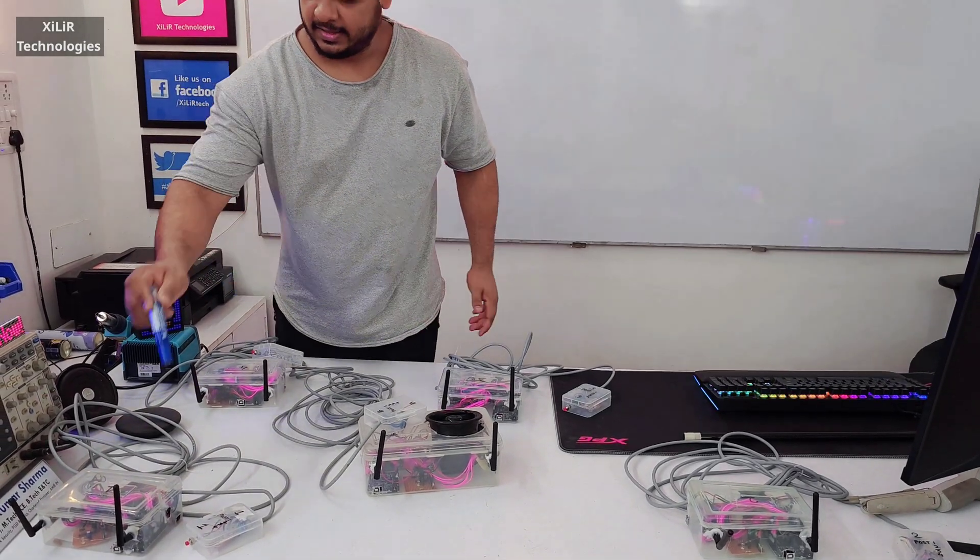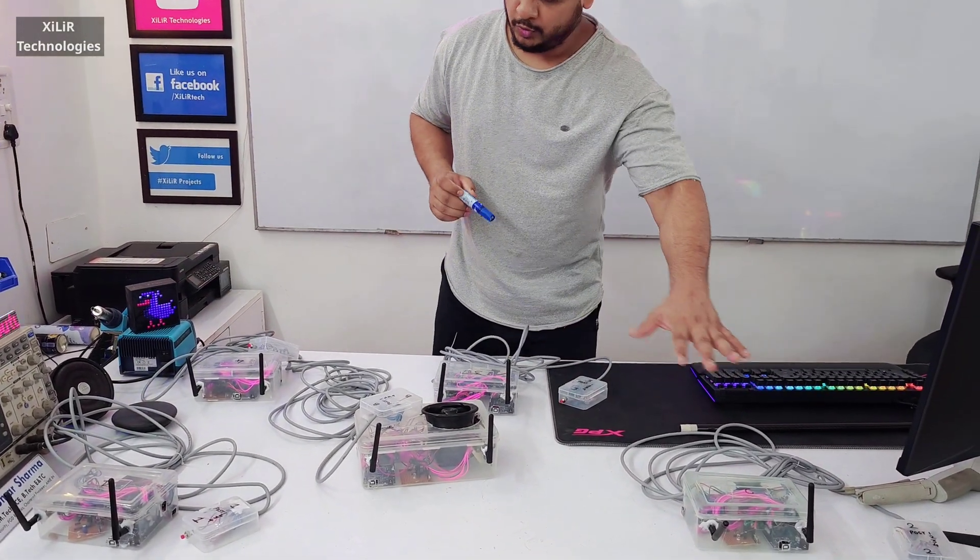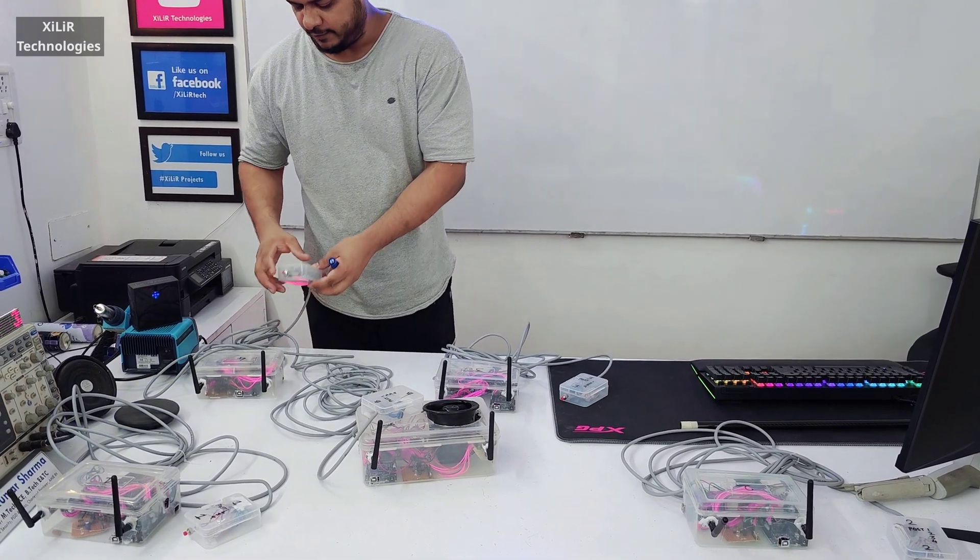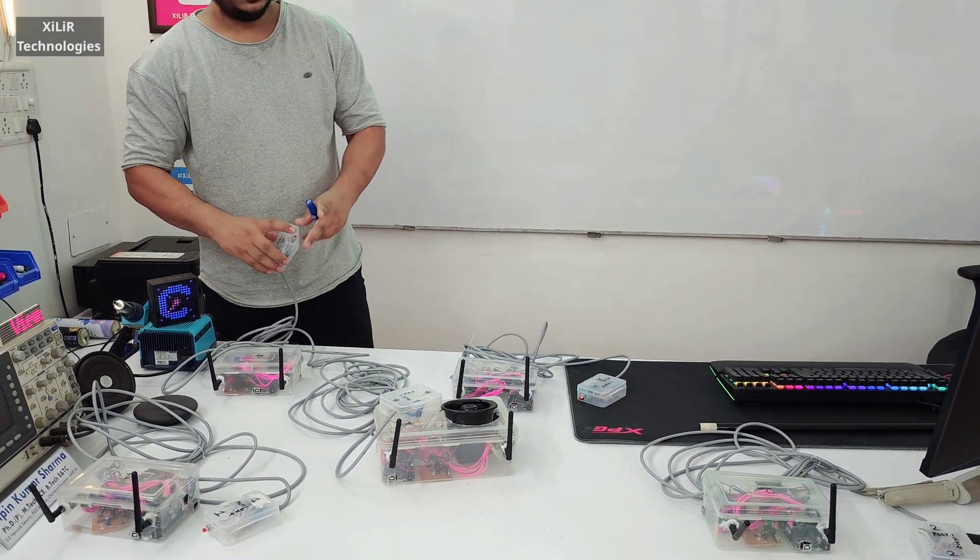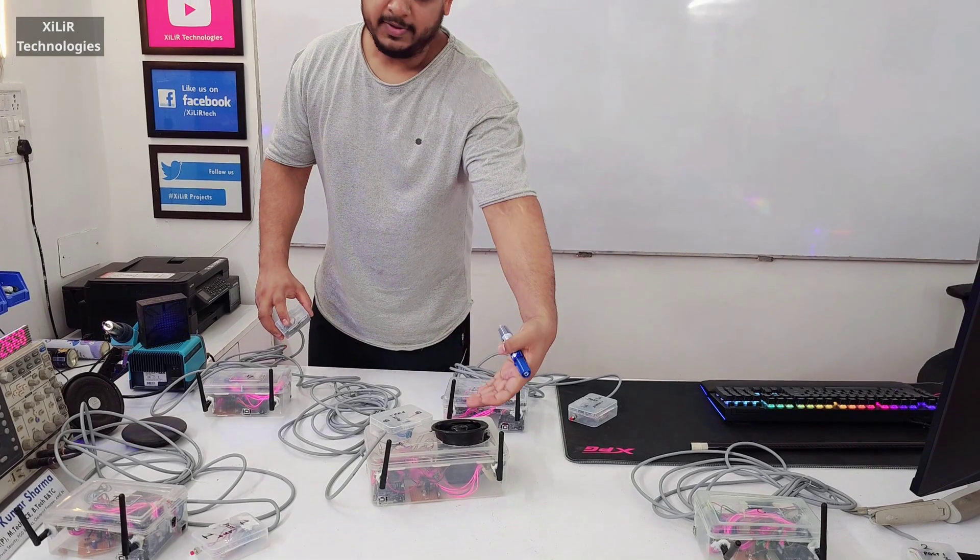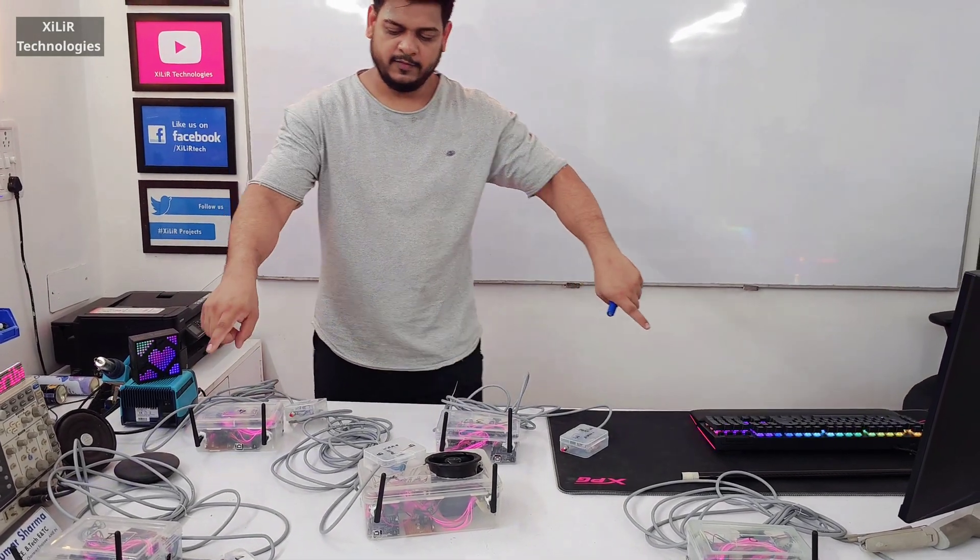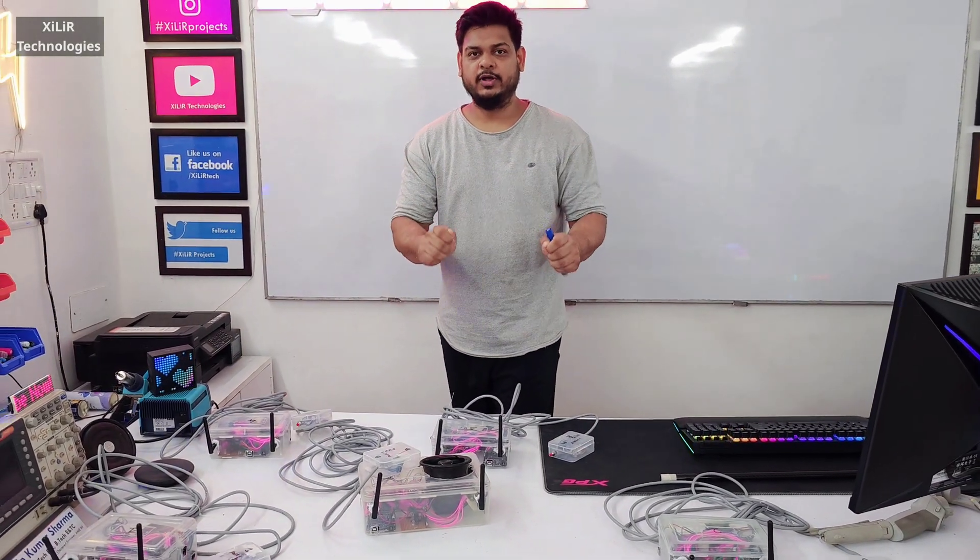These are marked as 1, 4, 3, 2. If we send data from any of the substations, we will receive it on this main station and every device will glow an LED on that particular marking.